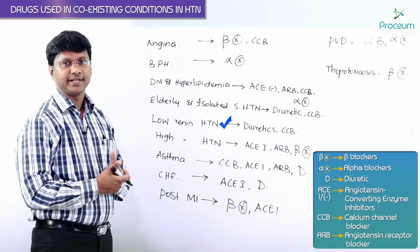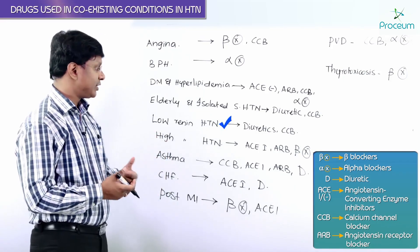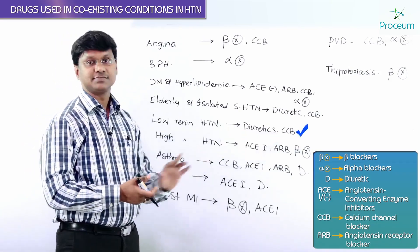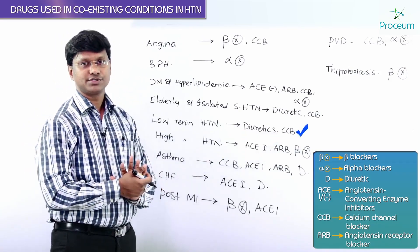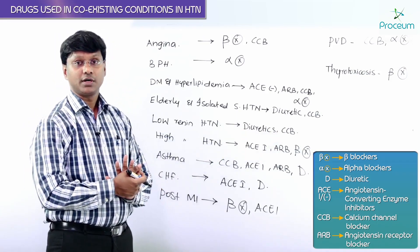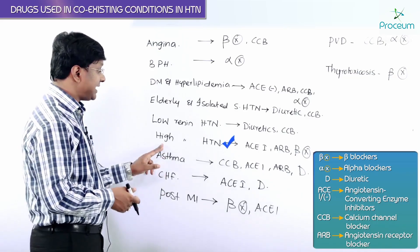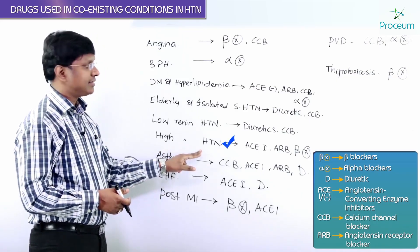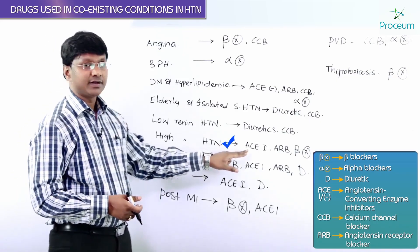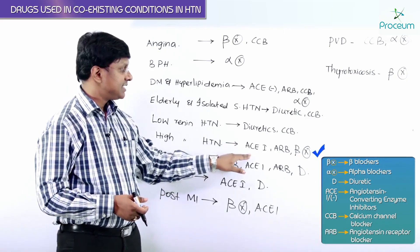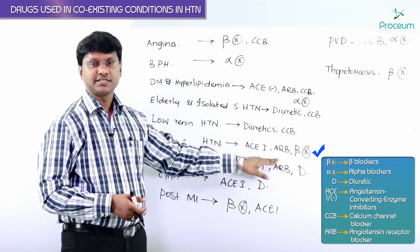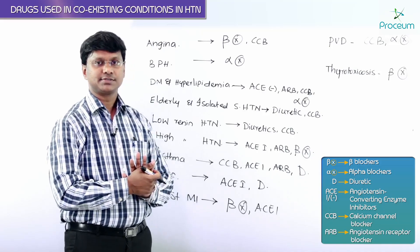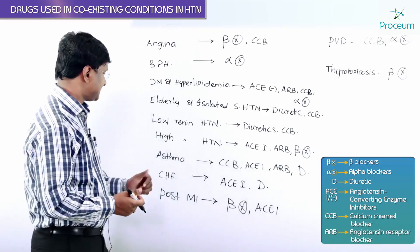If the individual is having low renin hypertension, the drug of choice will be either diuretics or calcium channel blockers. If the individual is having high renin hypertension, the preferred drugs are ACE inhibitors, angiotensin receptor blockers, or beta blockers.